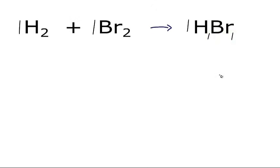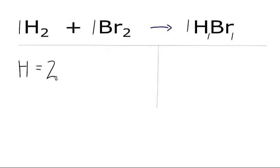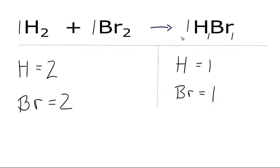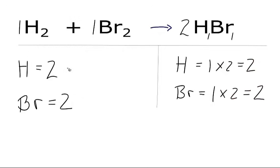To balance the equation, some people find it helpful to make a table. So let's count up the atoms on each side. Hydrogen: we have 2. Bromine: we have 2. Hydrogen on the product side: we have 1. And bromine: we also have 1. We can change the coefficients, so if I change this to a 2, that applies to the entire molecule. For the hydrogens, 1 times 2 gives me 2. And for the bromines, 1 times 2 also gives me 2. So now we have the same number of atoms on each side — 2 hydrogens and 2 bromines. This equation is balanced. You can remove the ones to make it look cleaner, and that's the final equation.